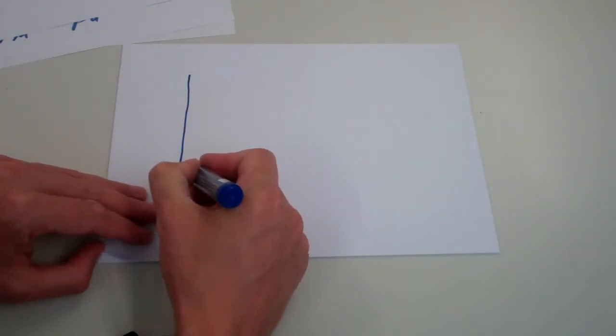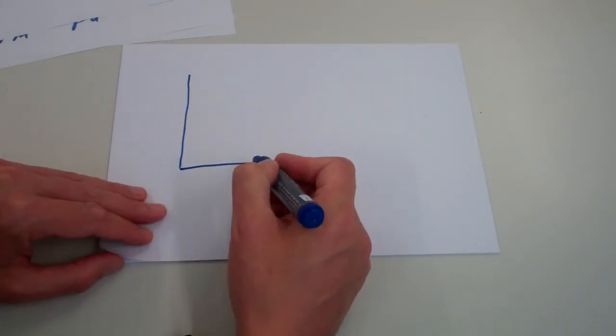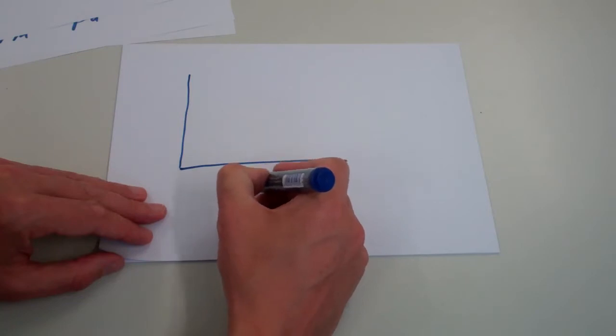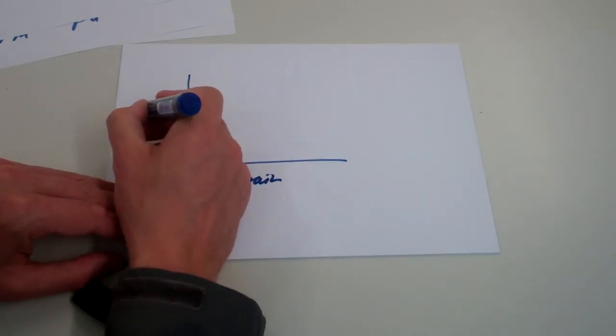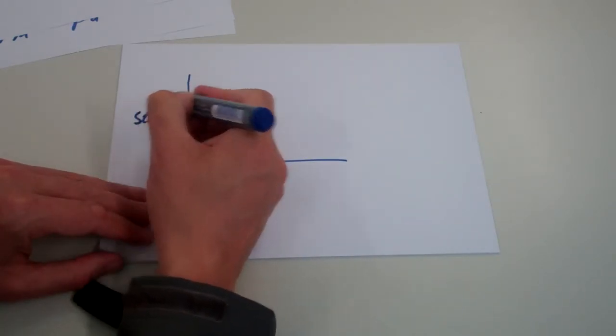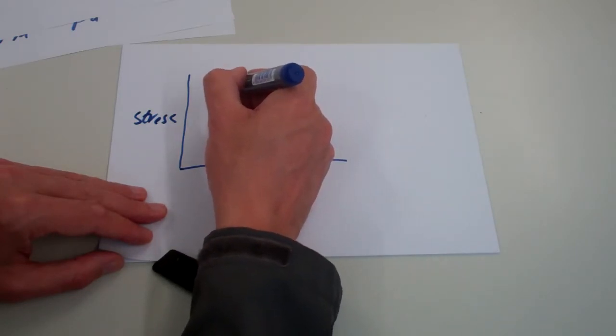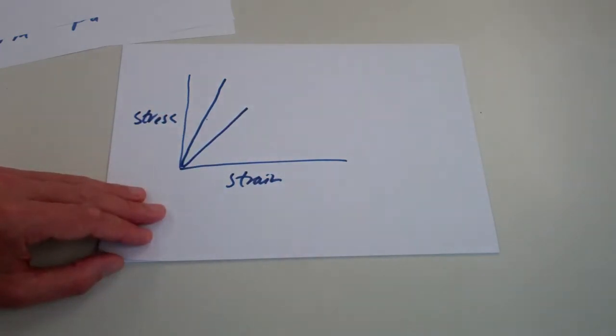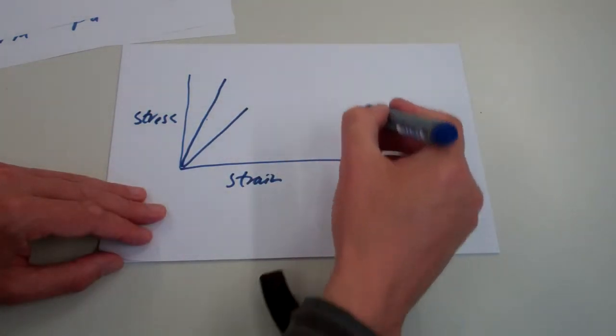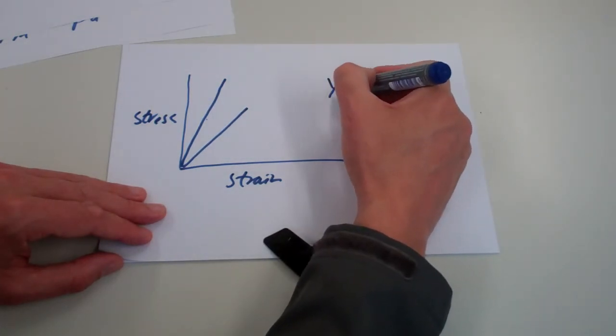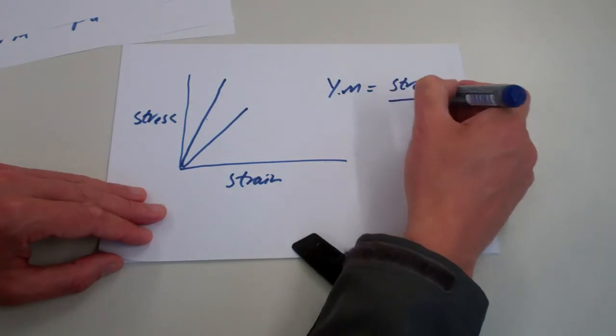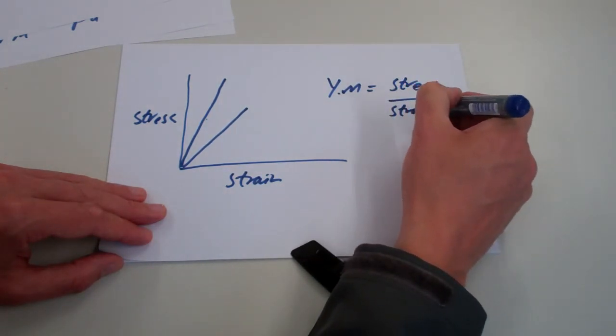So if we investigate the behavior of materials, the convention is to plot strain on this axis and stress on this axis. If we compare two different materials, the one with the steeper line is the stiffer material. And to quantify that, we define Young's modulus, which is equal to stress divided by strain.